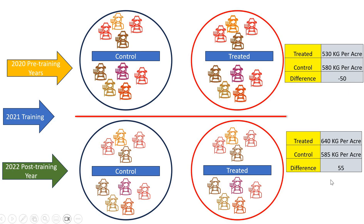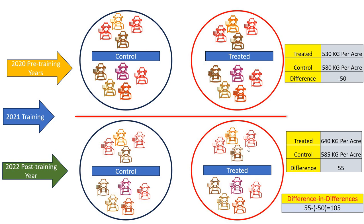So what is the difference in differences here? Difference in differences is the pre-training difference minus the after-training difference. If we subtract the pre-training difference from the after-training difference, we see there is a 105 kg per acre difference. This difference is actually caused by the training because we have properly controlled for other factors — we subtracted the pre-training yield per acre from the post-training yield per acre and checked the difference between these two differences, which is 105 kg per acre.